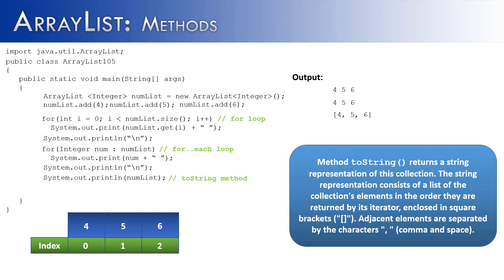If you output an object, it's going to call that object's toString method. The toString method has a very distinctive format: it's going to have opening and closing square brackets with the elements inside separated by a comma and a space. If we wanted to explicitly call the method, numList.toString() would output the exact same thing in the exact same way.